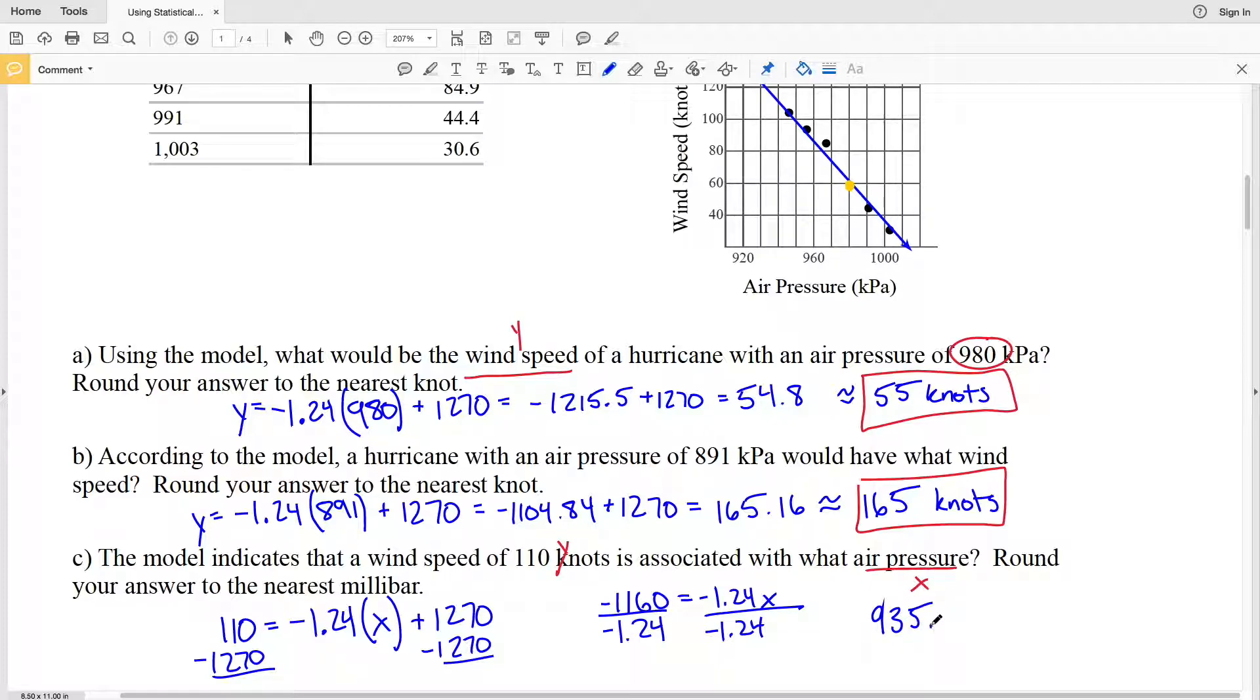So 935.48 is equal to X. However, we're rounding to the nearest millibar, so that's going to be that nearest whole number. 48 will round down, so we'll get 935 millibars as our solution in part C.